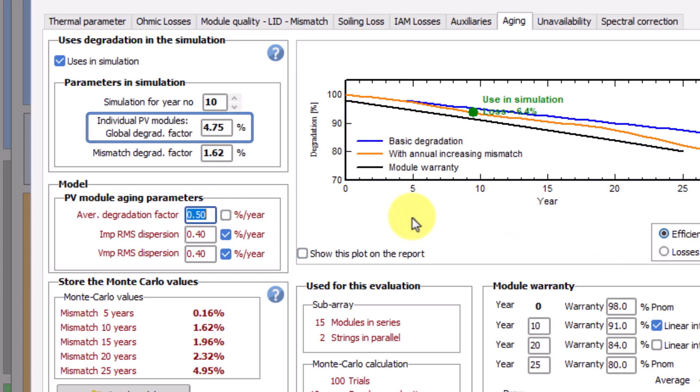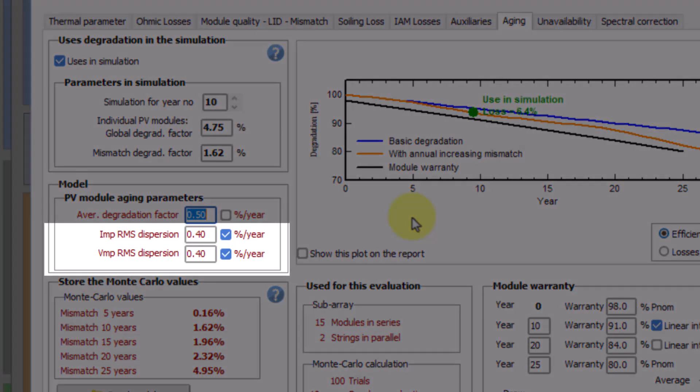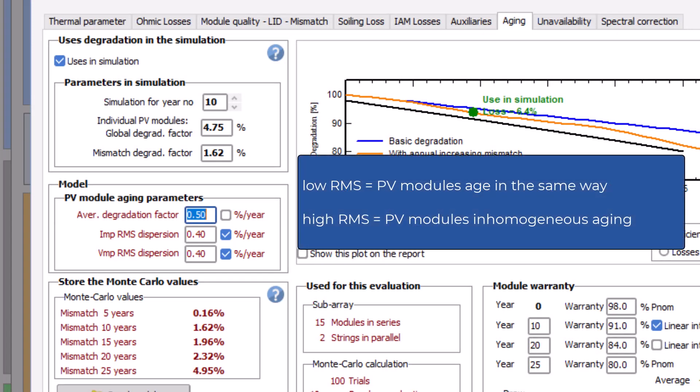Next, you can define the IMP and the VMP RMS dispersions. These parameters represent the variance of the MPP current and voltage. A low RMS dispersion rate means that the variance does not change significantly over time, meaning that the PV modules all age in the same way.